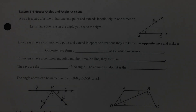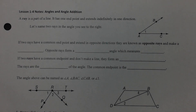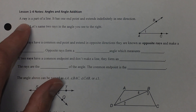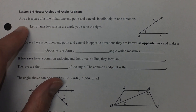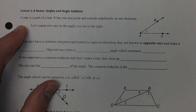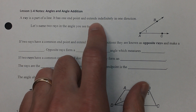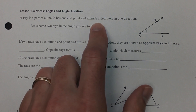Hello, today I'm going to cover Lesson 1-4 Notes, and this lesson covers angles and angle addition. So let's get started. A ray is a part of a line. We've covered rays before in our undefined terms. Recall that a ray has one endpoint and extends indefinitely in the other direction.